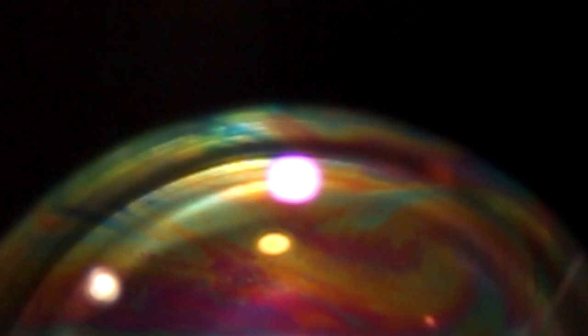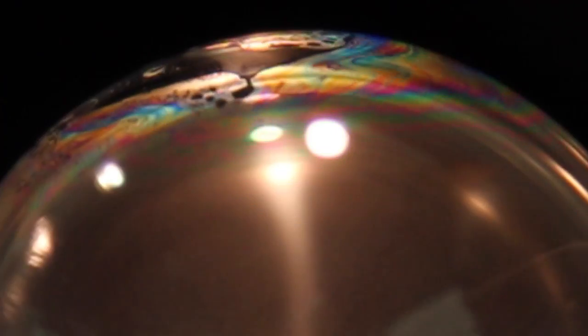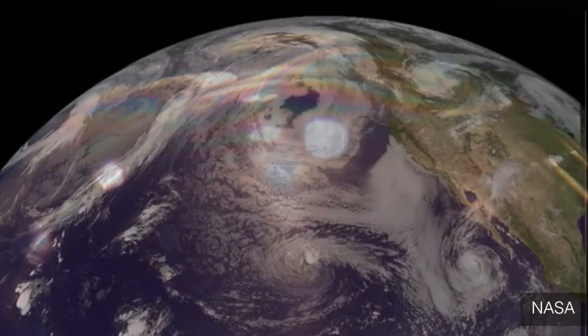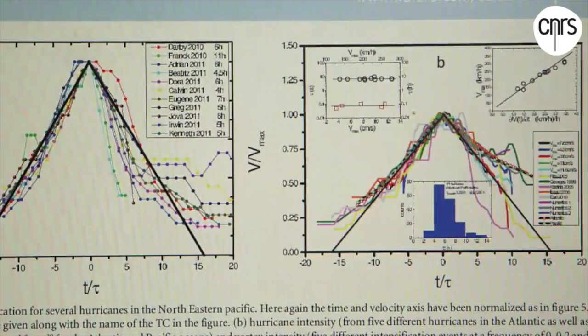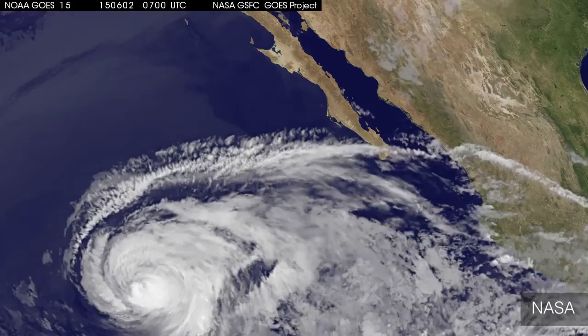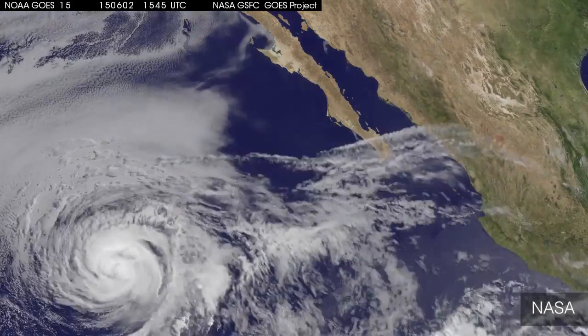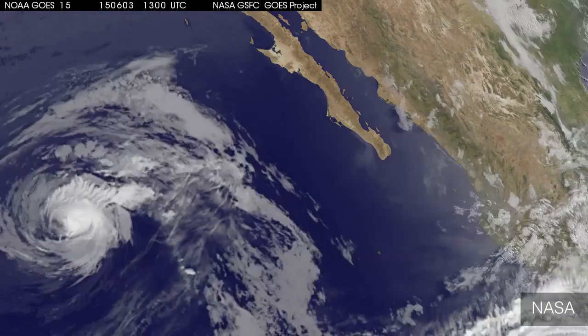Scientists noticed that the strength of these bubble vortices would intensify and then die in a uniform way. So they thought, why don't we compare this to hurricanes and cyclones? And it turned out the life cycle of the bubble vortices closely paralleled the more than 150 cyclones that they studied. This observation could give some insight into when a cyclone in our atmosphere will stop accelerating and then die out. A pretty good use for a bubble.